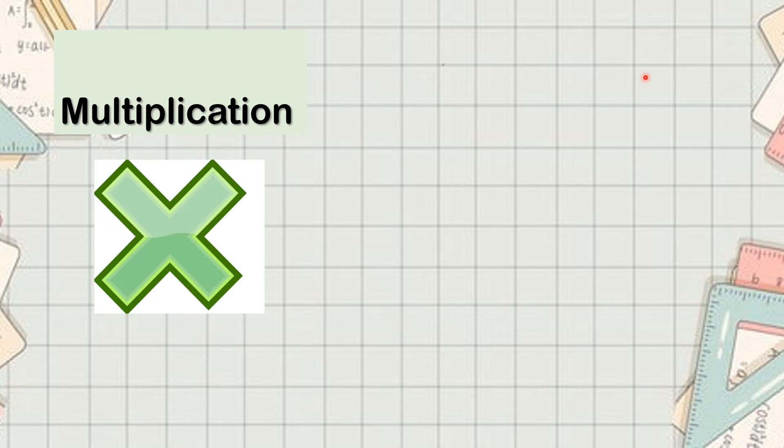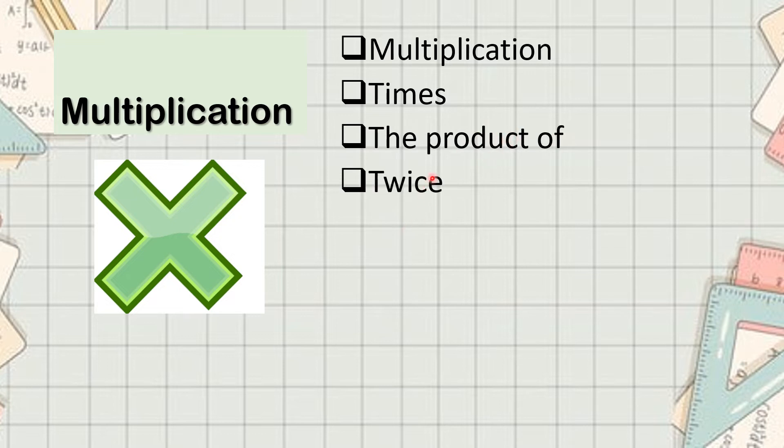Multiplication. Multiplication, times, the product of, twice, multiplied by, of. When you read these words, you know that it signifies multiplication.